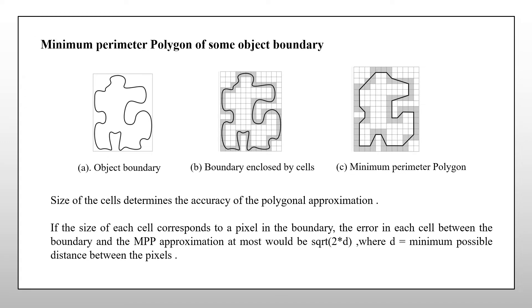Let us see the minimum perimeter polygon of some object boundary. Consider an object boundary and allow the boundary to shrink as a rubber band. This shrinking produces the shape of a polygon of minimum perimeter.